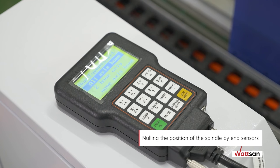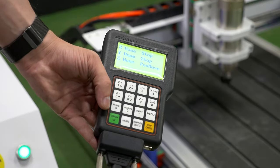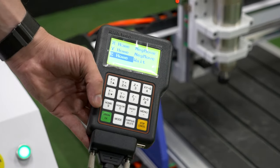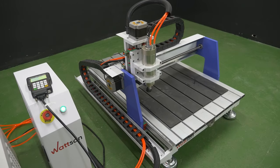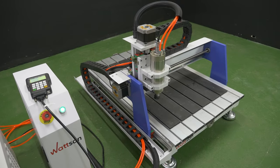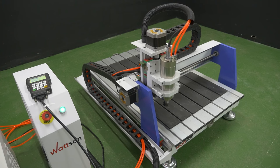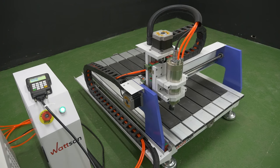Nulling the position of the spindle by end sensors. After starting the machine, take the main controller, select all axis home and press OK. Make sure that the machine has performed the procedure of nulling by end sensors correctly and the control panel is in the home menu.